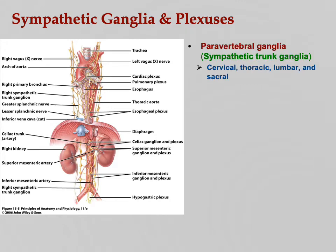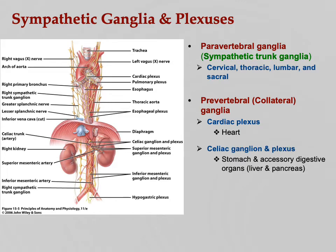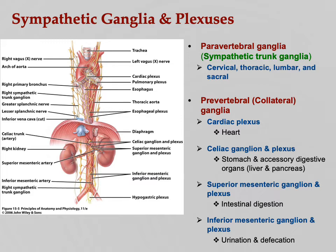The paravertebral sympathetic trunk ganglia run cervical, thoracic, lumbar, and sacral — you can see that big chain in the illustration running along the spinal cord. Then there are the prevertebral or collateral ganglia, including the cardiac plexus at the heart, the celiac ganglia and plexus — going to the stomach, liver, and pancreas — the superior mesenteric, dealing mostly with digestion, and the inferior mesenteric, dealing with urination and defecation in the lower abdomen. You should know which are the sympathetic ganglia.